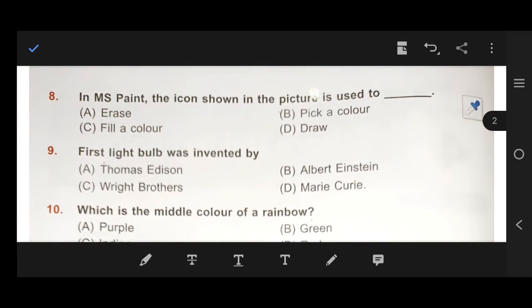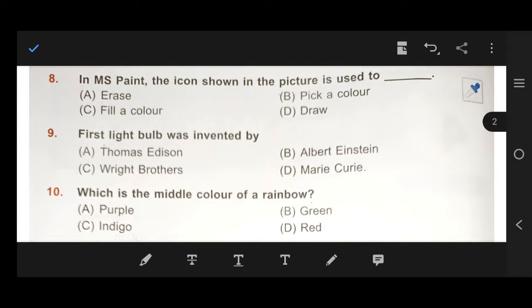Next, number 8, in MS Paint, the icon shown in the picture is used to pick color. Next, number 9, first light bulb was invented by Thomas Edison. Right answer is Thomas Edison. Next, number 10, which is the middle color of a rainbow? Right answer is B, green.